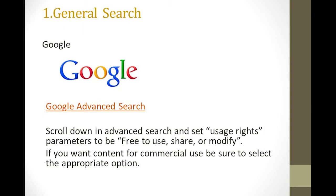Number 2: Google Advanced Search. To get to Google Advanced Search, go to Settings and then click on Advanced Search. Scroll down to Advanced Search and find Usage Rights. The parameter can be set to free to use, share, or modify. If you want your content for commercial use, be sure to select the appropriate option.